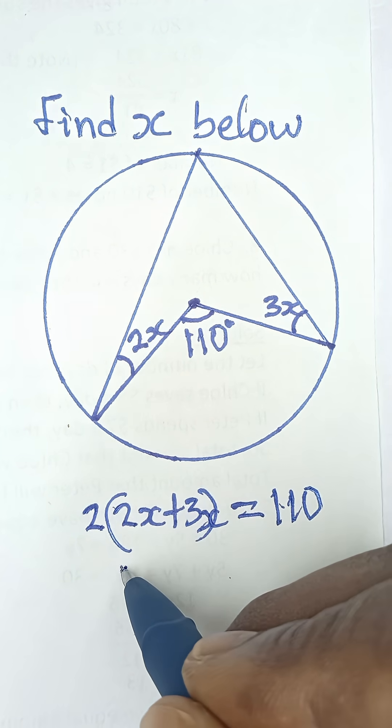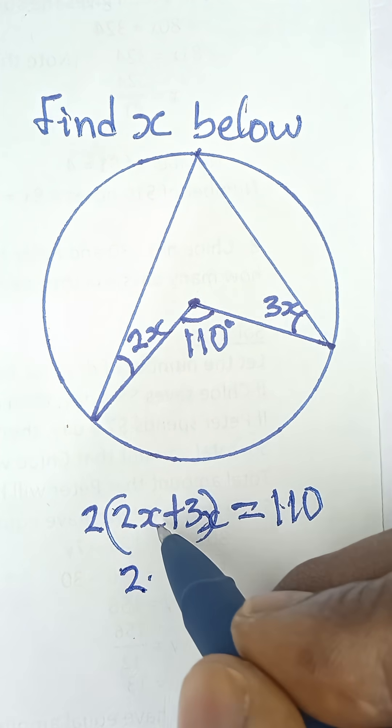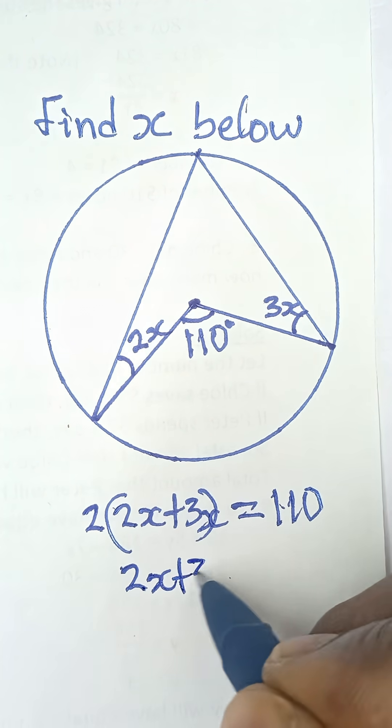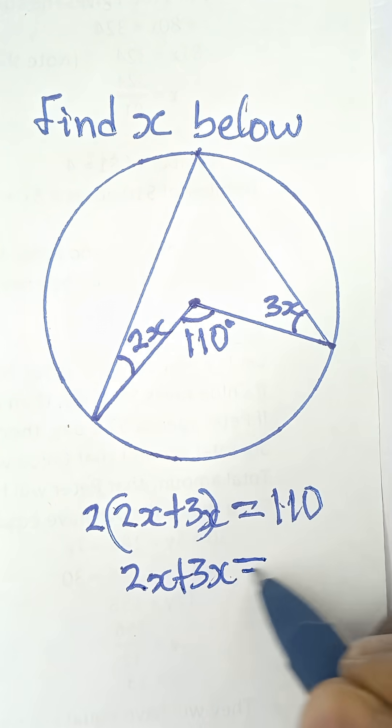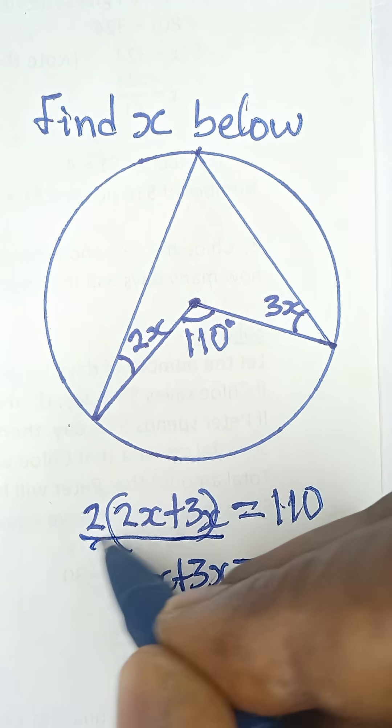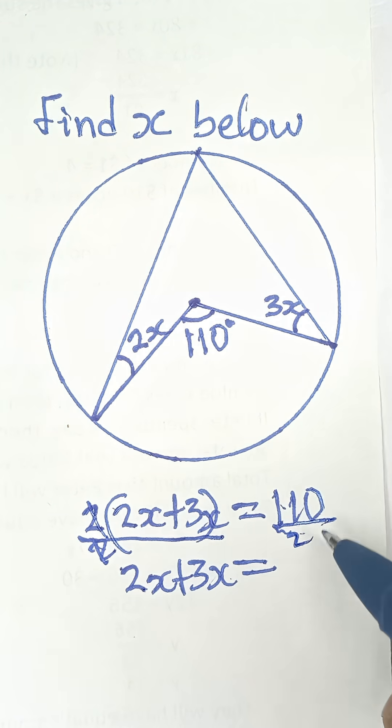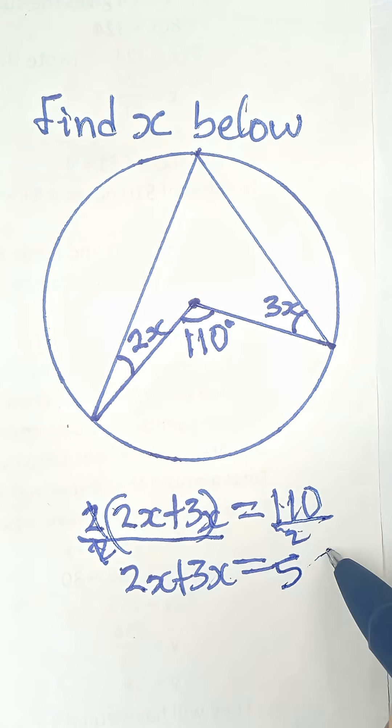So 2x plus 3x should be equal to, when you divide both sides by 2 now, these 2s cancel, you divide the side by 2, and then we have 55.